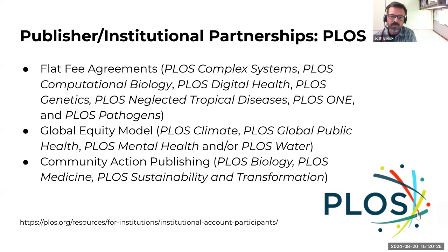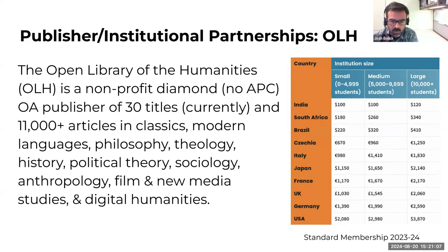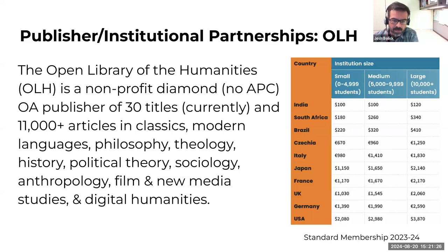We can also support open publishing in the humanities. The Open Library of Humanities is a nonprofit open access publisher of 30 titles — a diamond open access publisher, meaning it doesn't charge readers or authors, so no article processing charges. Their standard membership fee is based on World Bank gross national income per capita and enrollment as a measure of institution size. For example, a medium-sized institution in South Africa would pay an annual fee of $260, whereas one of the same size in the US would pay just short of $3,000. There are over 340 library members worldwide.